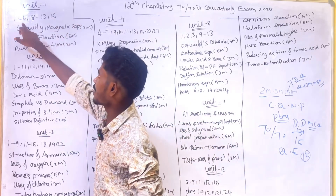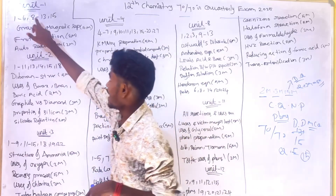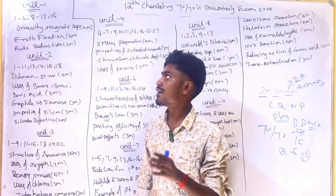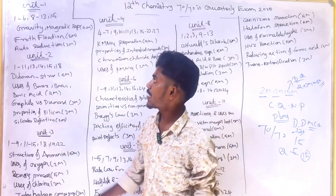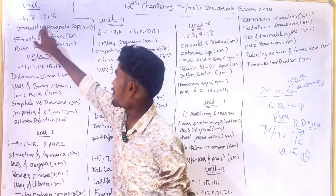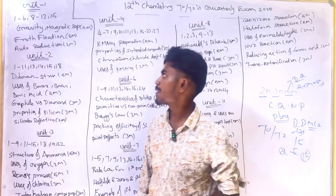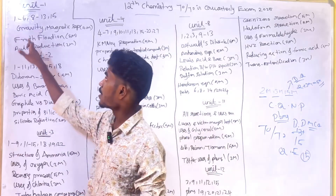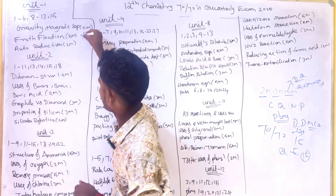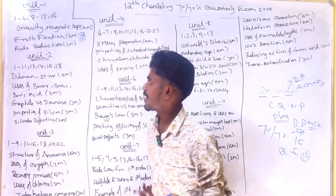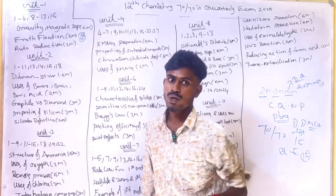Unit 1: Book back questions 1, 2, 3, 4, 5, 6, 8, 9, 10, 11, 12, 13, and 15 are very important. Key topics: Gravity Separation and Magnetic Separation are very important. Froth Flotation Method is very very important for 5 marks. Auto Reduction is a 2 mark question.